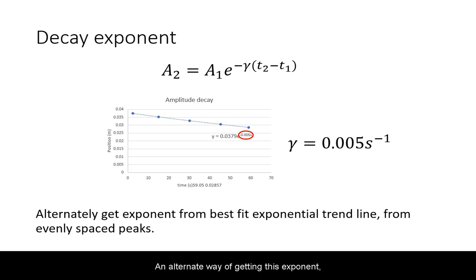An alternate way of getting this exponent is to graph five evenly spaced peaks from the graph and have your spreadsheet software run an exponential trend line through them. Display the equation on the chart and just read off the exponent.